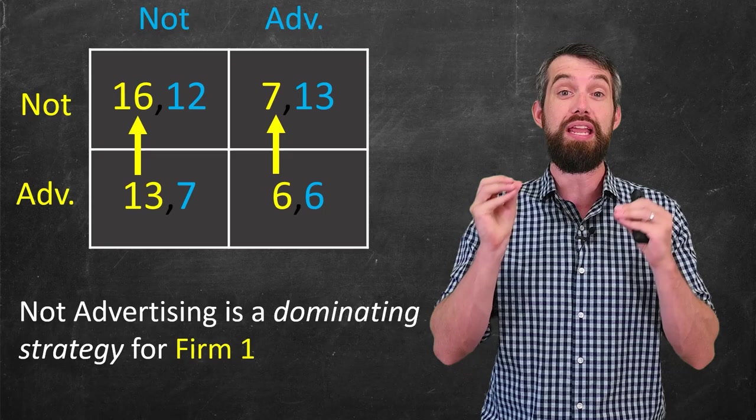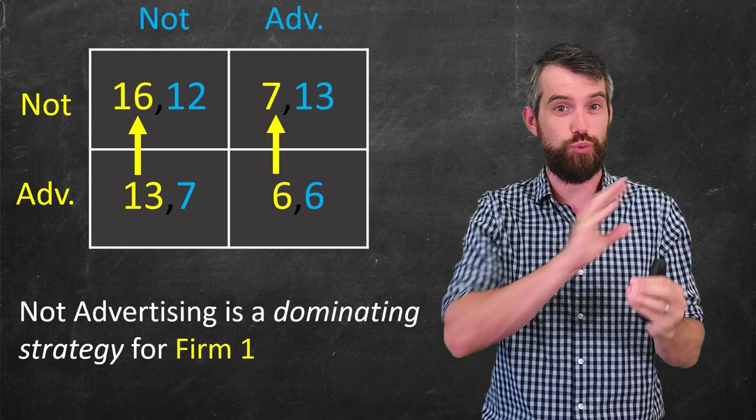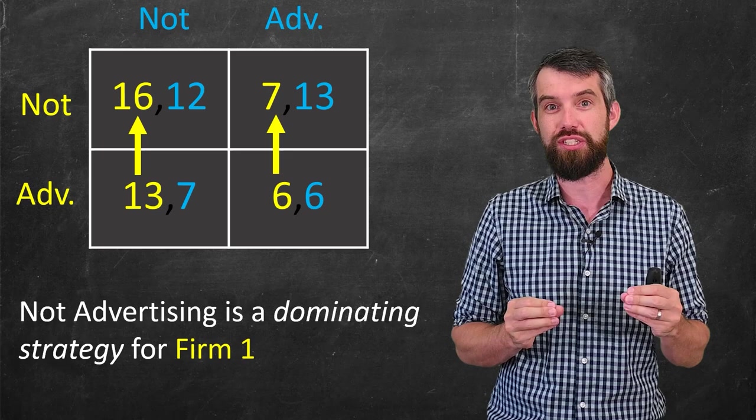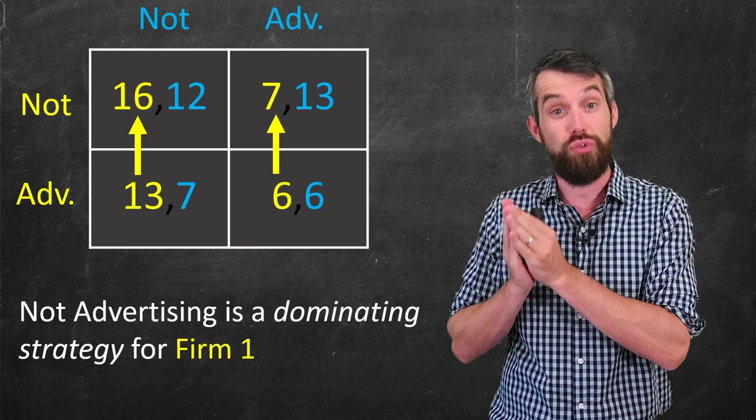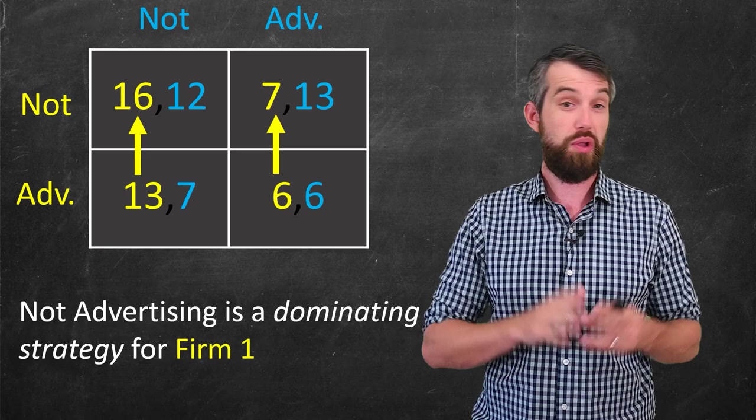And this leads us to the conclusion that not advertising is a dominating strategy. It is always better for firm one to not advertise, regardless of what firm two does. The exact amount of money they make does change based on what firm two does. But it's always more money if they're going to not advertise than if they do advertise, under the assumptions of this payoff matrix.